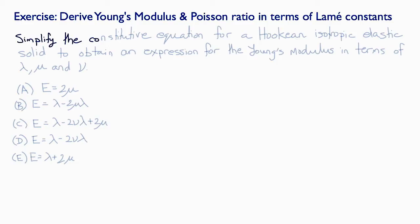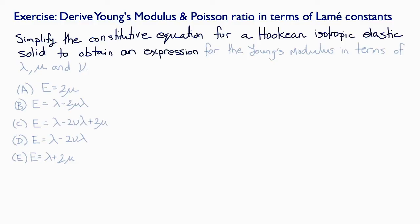Let's try an exercise now. Try to simplify the constitutive equation for a Hookean isotropic elastic solid to obtain an expression for the Young's modulus E in terms of the Lamé constants lambda and mu, and the Poisson's ratio nu.